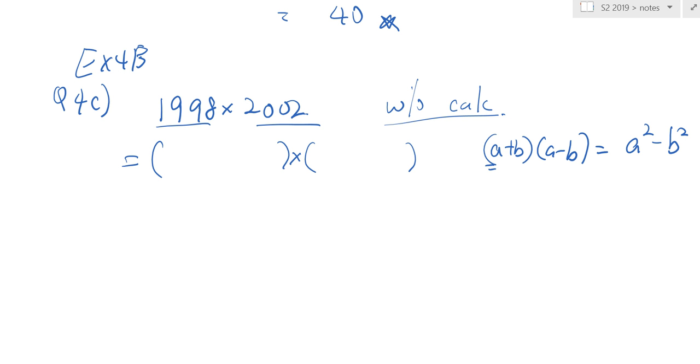So, what will you choose? So, you will choose 2000 plus 2, 2000 minus 2. So, the answer is 2000 square minus 2 square. So this is A square. This is A minus B, A plus B. This is A square minus B square. And this you can do easily.